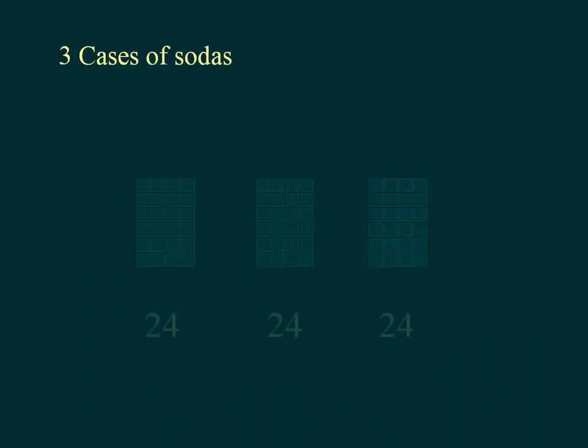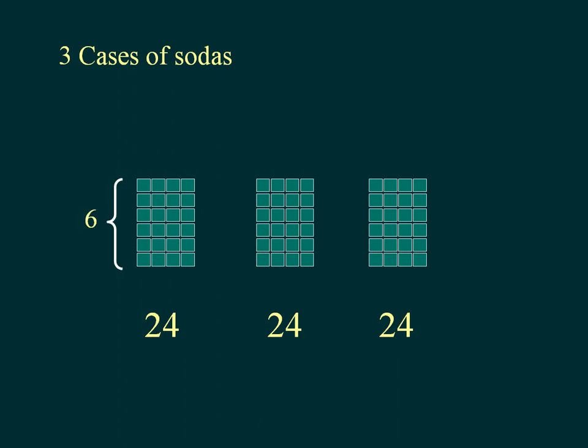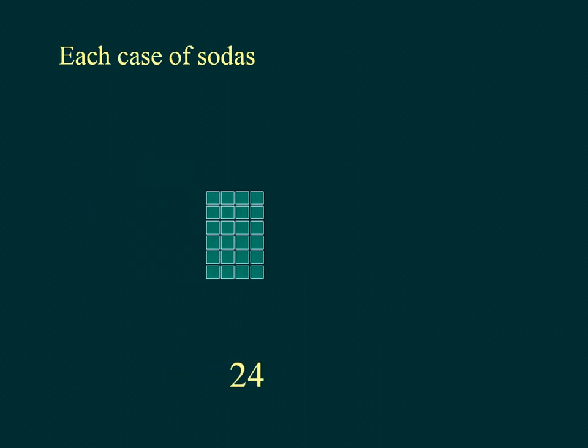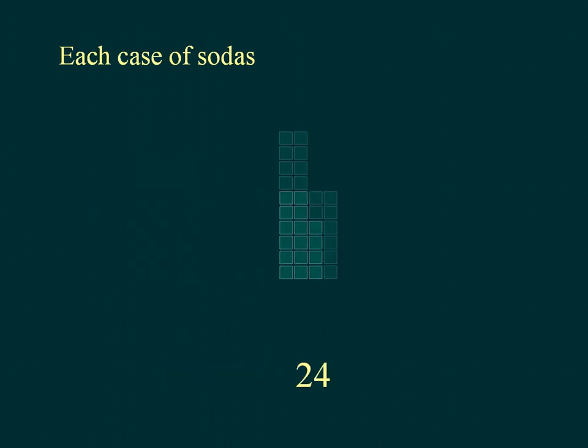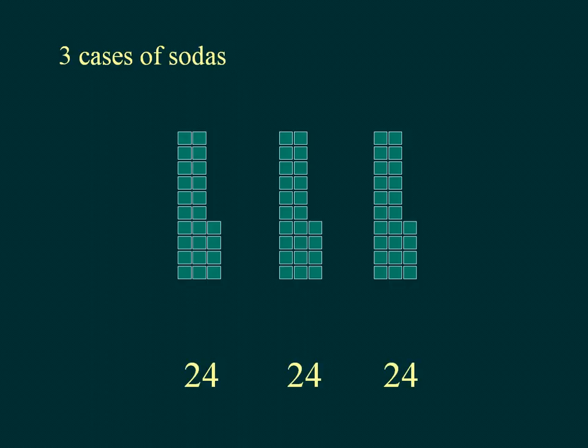Here is the concrete representation of the 3 cases of sodas. Each case of soda is arranged in 6 rows of 4 cans. Each case is rearranged as 2 tens and 4 units. There are 3 cases.